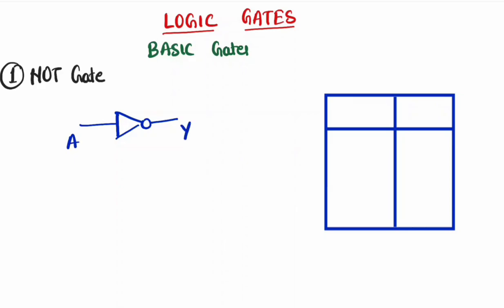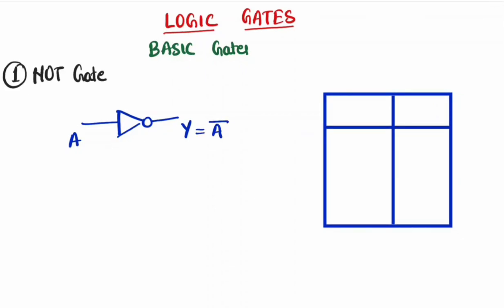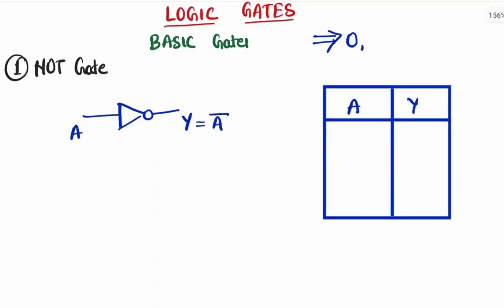Let's say A is my input and Y is my output. The output is the opposite of the input, represented with a bar over A. In digital circuit design there are only two states: zero or one. Zero is considered as off and one is considered as on. So if my input is zero, my output would be one, and if my input is one, my output would be zero.